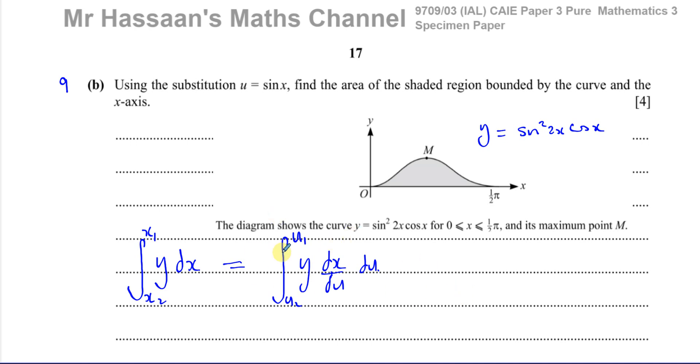According to this, we need to know what U1 is and what U2 is. We know that U is equal to sine X. So U1 is when X equals pi over 2, so U1 equals sine of pi over 2, which is going to be 1. And U2 is going to equal sine of 0, which is equal to 0.